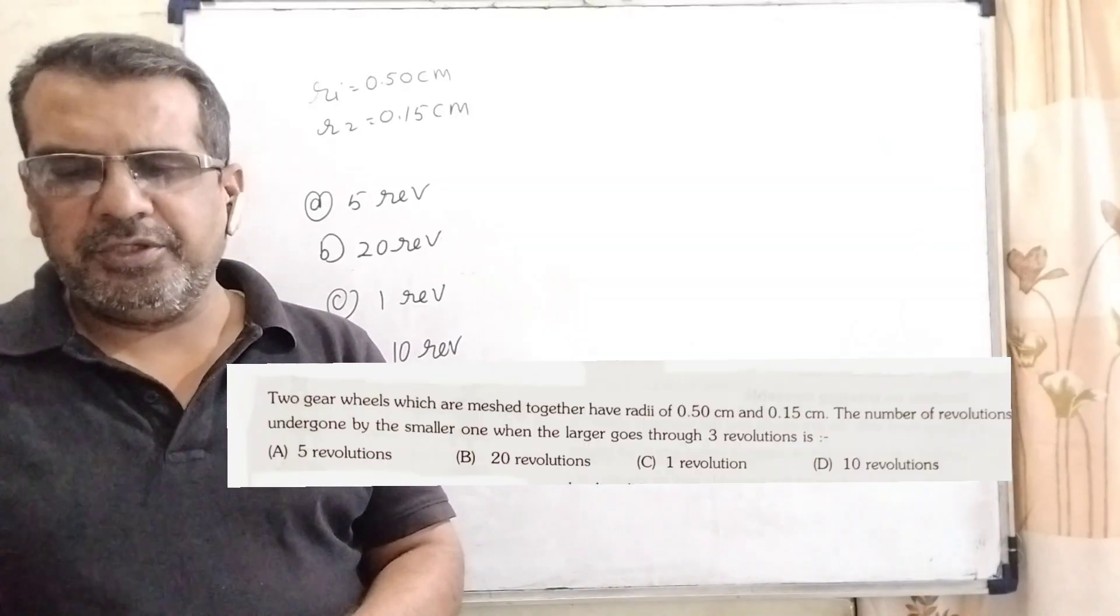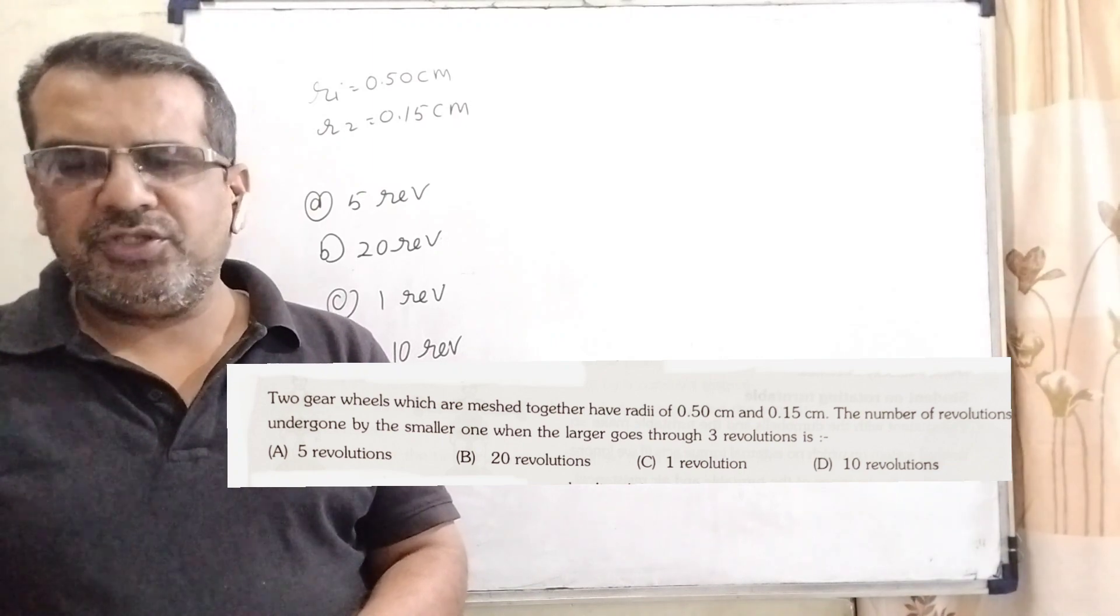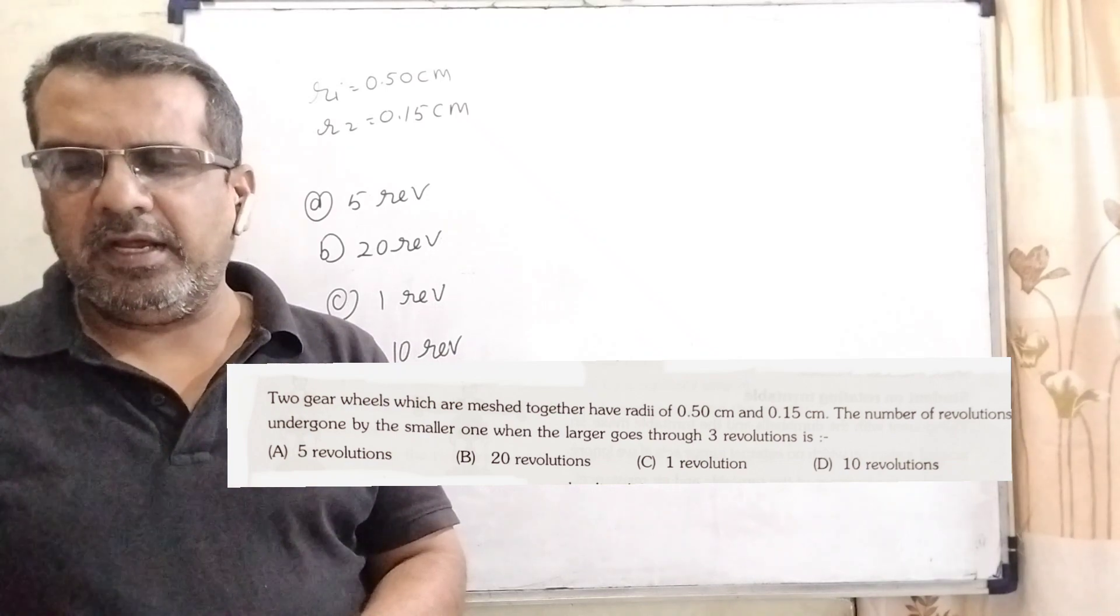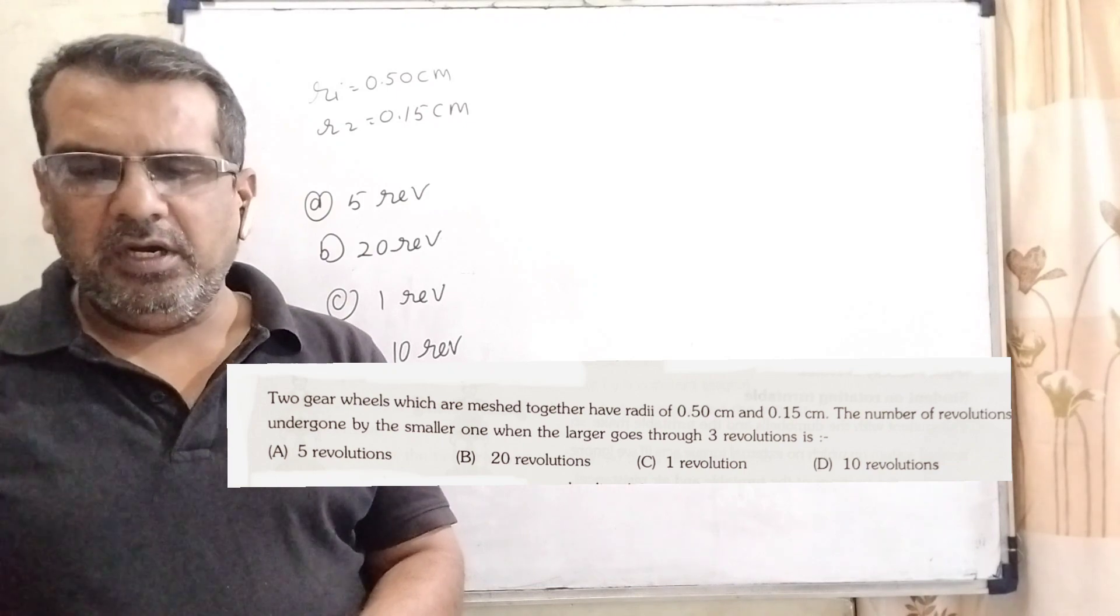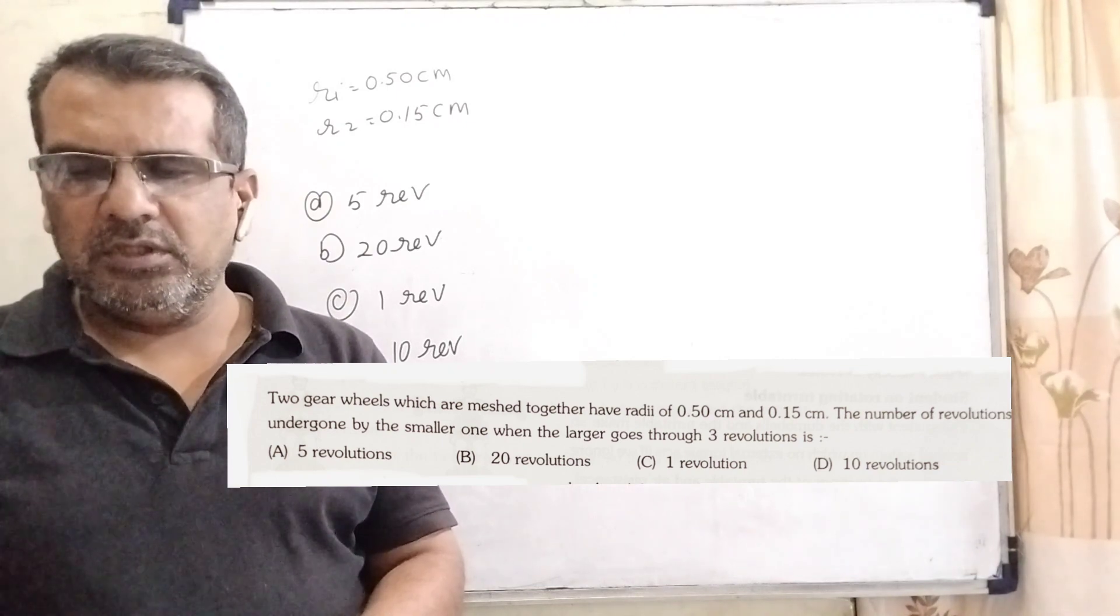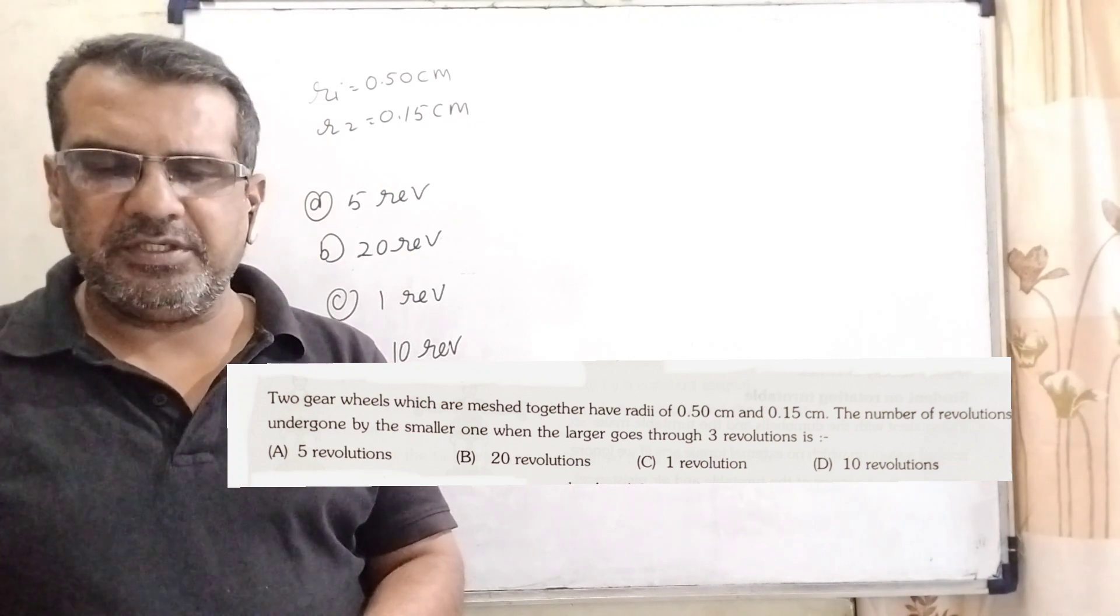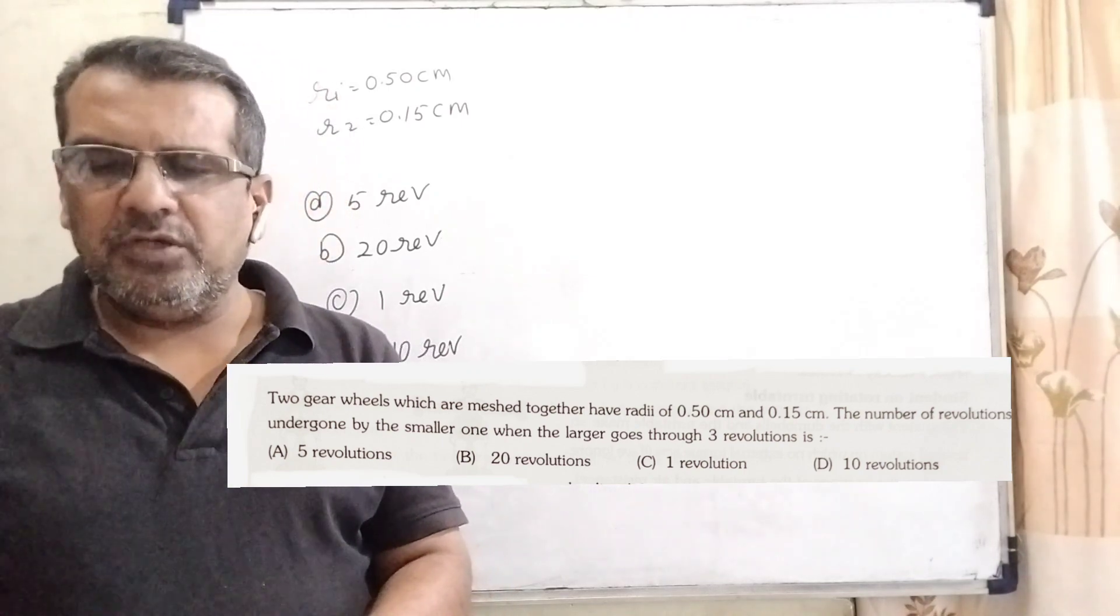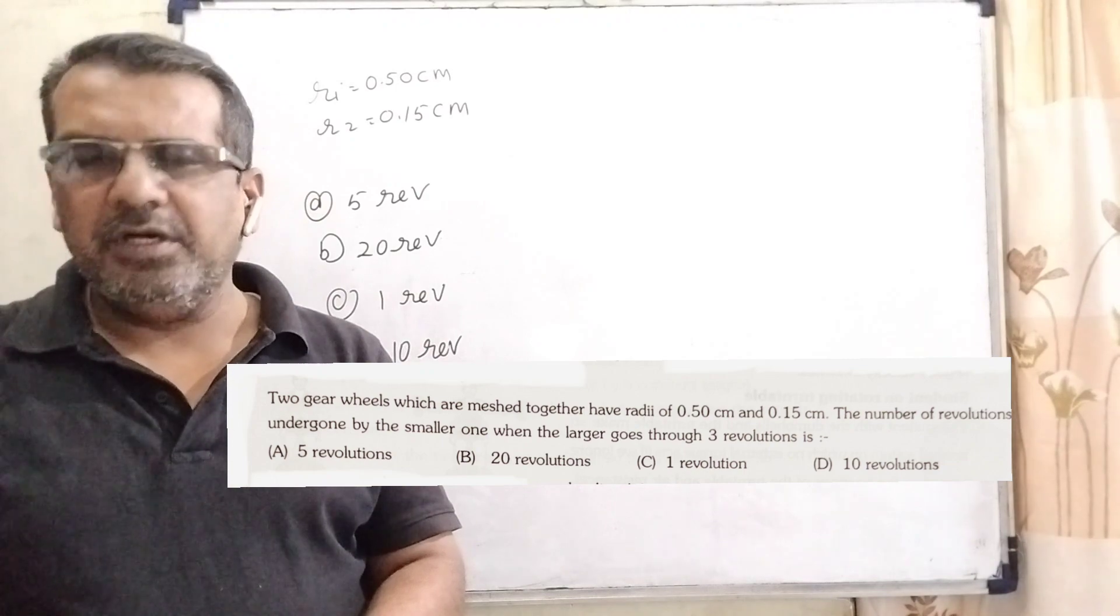Now here is the question. Two gear wheels which are meshed together have radii of 0.50 cm and 0.15 cm. The number of revolutions undergone by the smaller one when the larger goes through 3 revolutions. Here we have given 4 options. Option A, 5 revolutions. Option B, 20 revolutions. Option C, 1 revolution. Option D, 10 revolutions.